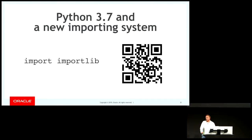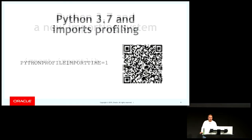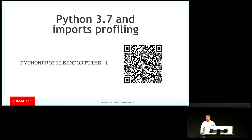As part of Python 3.7, a new library was introduced called importlib. Before that, it was named 'imp', if I recall correctly. Also, new things were added as part of the 3.7 release — a new tool called Import Profile Tools. You can start your code and actually see how long each import takes to run.